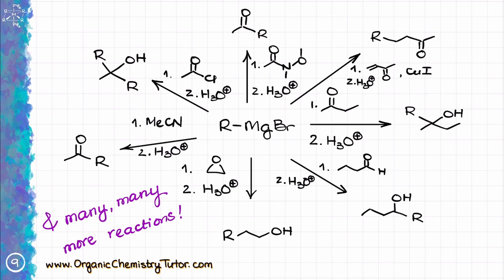The Grignard reaction is an incredibly versatile method of making new carbon-carbon bonds. For many years it was the premier method of carbon-carbon bond formation, and its profound impact on organic chemistry means the period from the early 1900s to about 1960 is known as the Grignard era. While this reaction is over 120 years old, it is still regularly used in modern research. Whenever you're looking at a synthesis problem and see that a new carbon-carbon bond was added, chances are the key step is going to be the Grignard reaction.